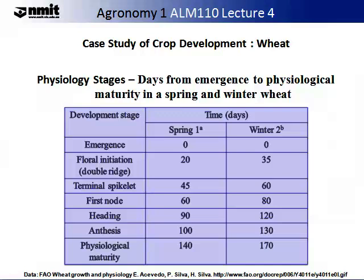On the slide, you will see a table representing the physiological stages of wheat from days of emergence to physiological maturity, comparing spring and winter wheat. This data is based on data from the US produced by the FAO. Various environmental stresses — particularly heat, but also water and salinity — may shorten the wheat growth phases. This table gives you some idea about the length of each of these stages.